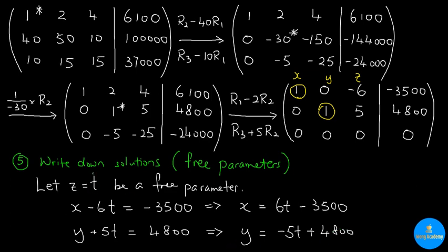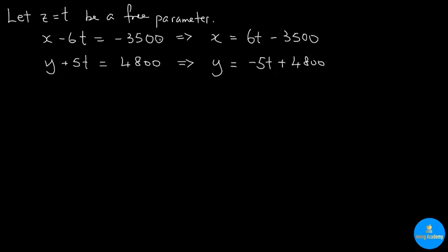Hence, we have the value for z, x, and y. All the unknowns are now solved. We can also rewrite our solution in a coordinate form. The first coordinate is x, so we are going to write down 6t minus 3500. The second coordinate is y, so we write down negative 5t plus 4800. The third coordinate is z, and the value of z is t, so we write down t.